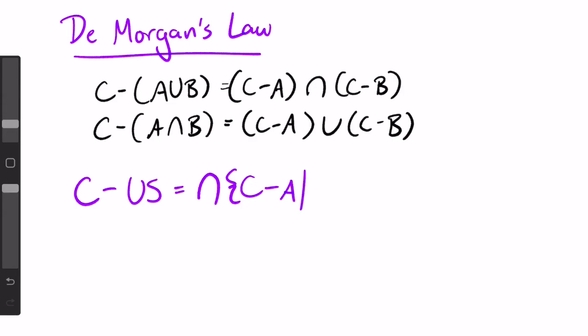In a general format we would write C minus (union S) is equal to the intersection of all sets C minus A such that A is in S, and C minus (intersection S) is equal to the union of all sets C minus A such that A is in S. This is the exact same situation as the distributive property where we just rewrite A union B union C, etc., as union S and the same with intersection.